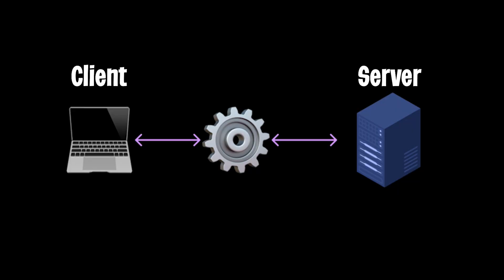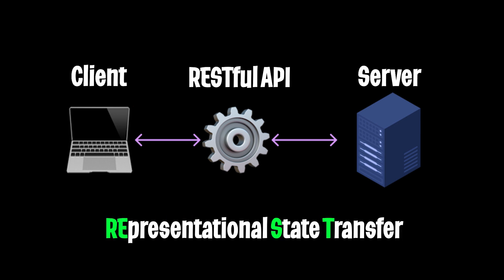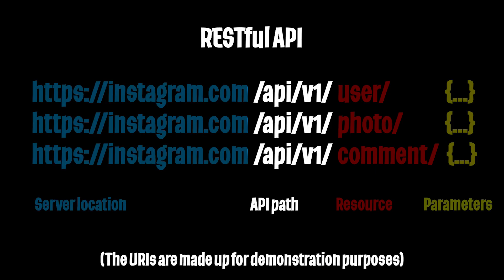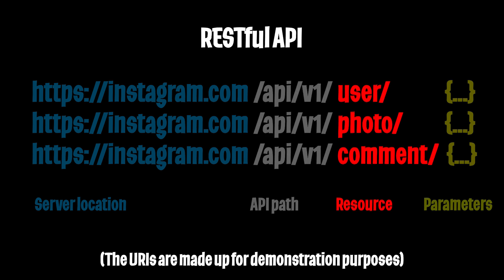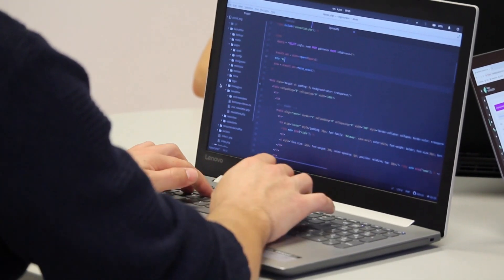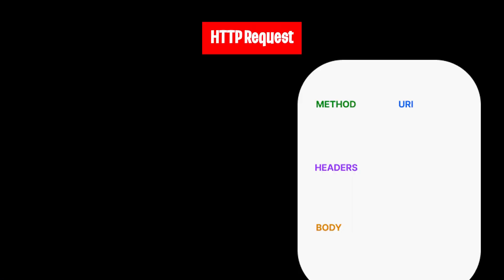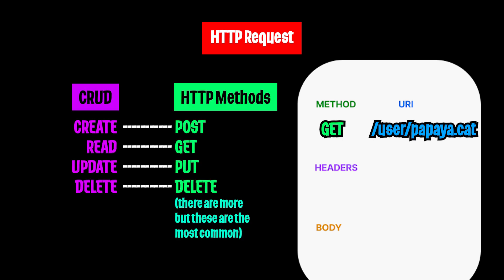The most common API used in the world is RESTful, which stands for Representational State Transfer. A RESTful API organizes resources into URIs that are intuitive and super easy to use. As programmers, we can access these resources by creating a request to a server. The request will include the URI you want to access and a verb that represents the request method, which basically just boils down to CRUD.